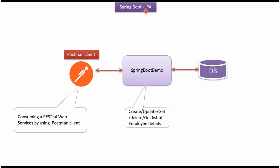In this video tutorial I will explain how to integrate JPA in a Spring Boot application. JPA stands for Java Persistent API. In this example we will use MySQL database. The Spring Boot demo application is a microservice application, and it exposes REST endpoints to create, update, get, and delete employee records, as well as get a list of employee records from the database. In this Spring Boot demo application we will integrate JPA.